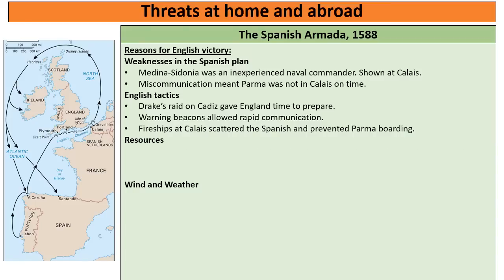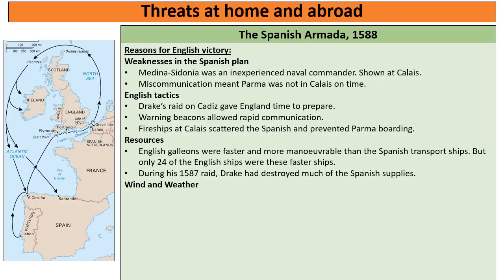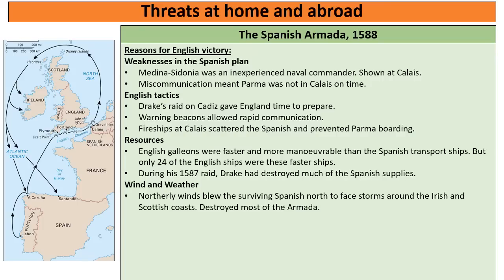Resources also played a big part. The English galleons were faster and more manoeuvrable than the cumbersome Spanish transport ships — although only 24 of the English ships were these faster types, so perhaps the impact wasn't as large as often claimed. Drake had also destroyed much of the Spanish supplies during his raid, which impacted them later. And we cannot ignore wind and weather — the storms which blew the Spanish around Scotland and Ireland were really what destroyed a large part of the Armada.